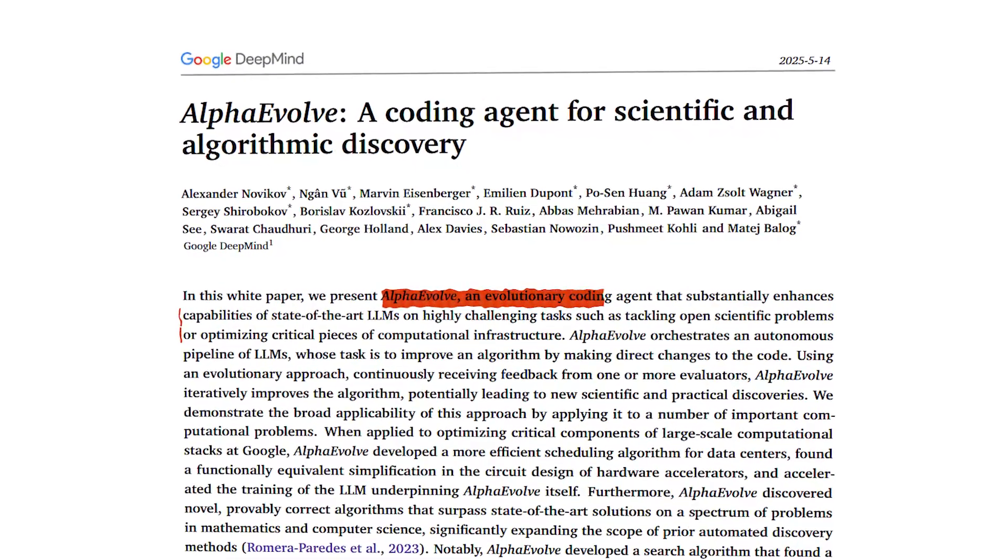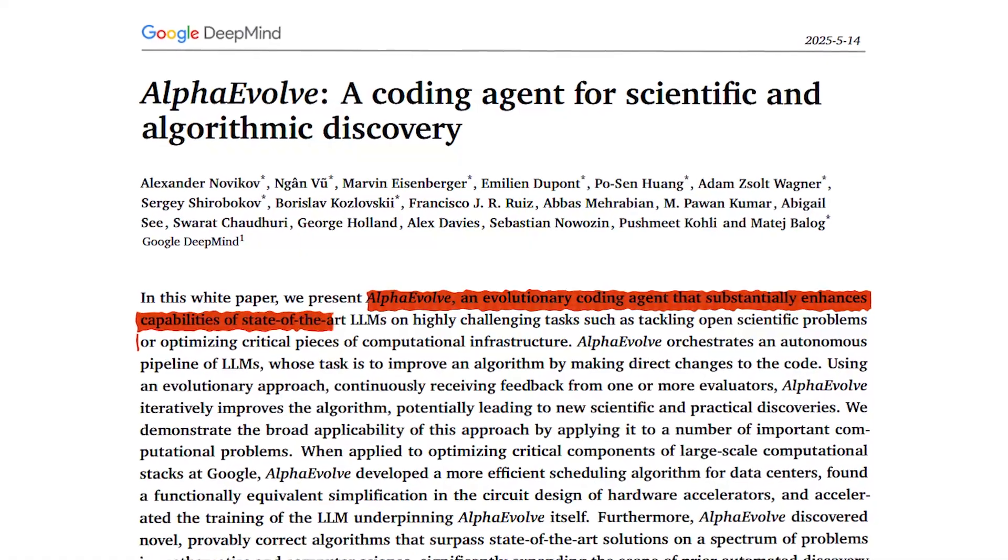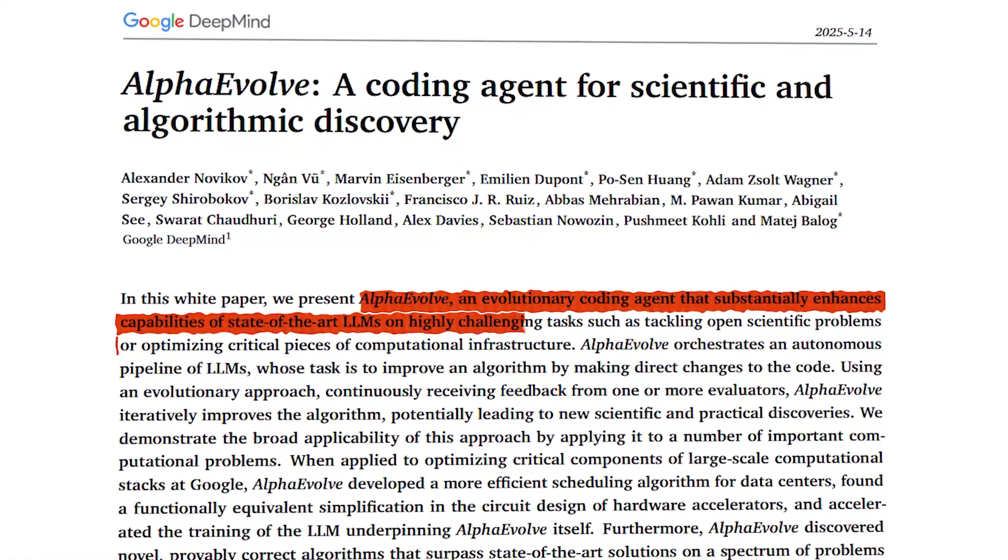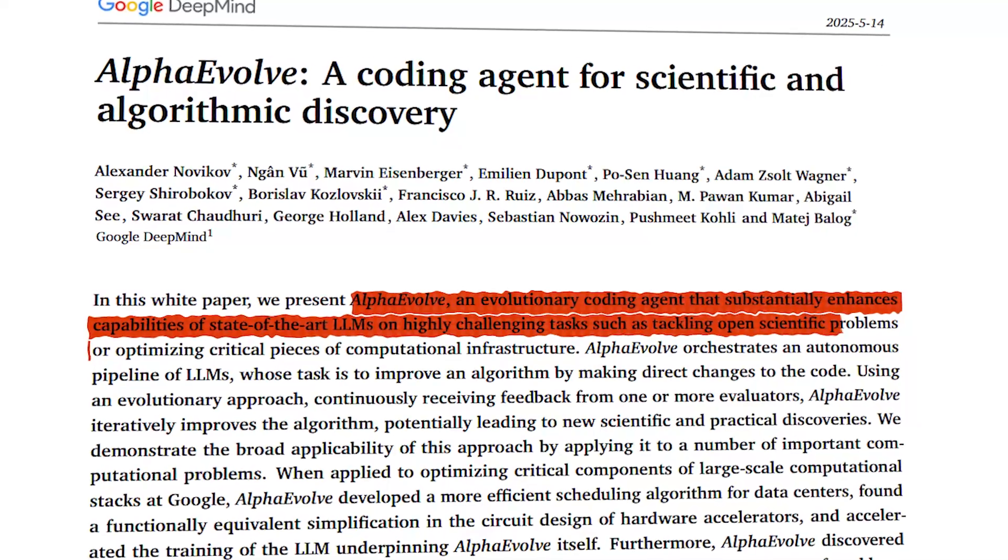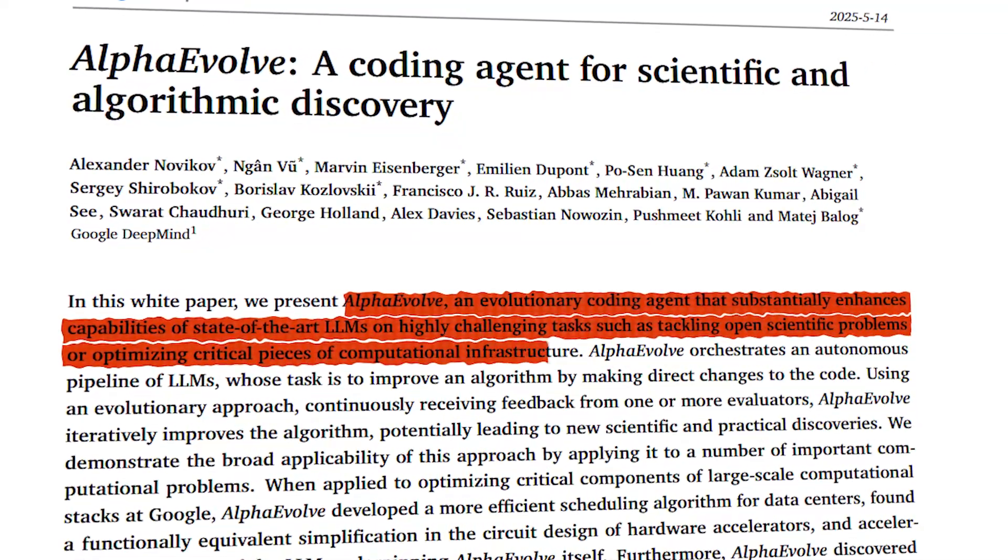AlphaEvolve is an evolutionary coding agent that substantially enhances capabilities of state-of-the-art elements on highly challenging tasks, such as tackling open scientific problems or optimizing critical pieces of computational infrastructure.